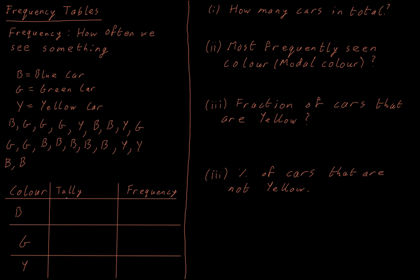We're going to deal with the tally, which is how we're going to count up the number of each type of car. And then we're going to convert the tally into the frequency. In total, how much did we see each colour of car?